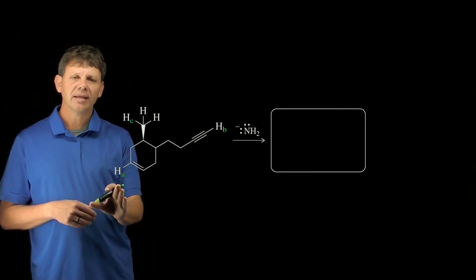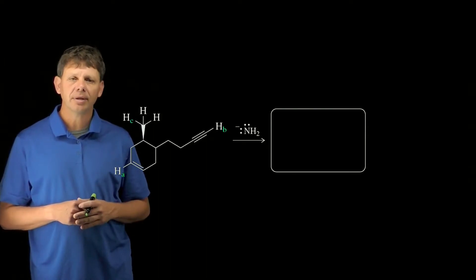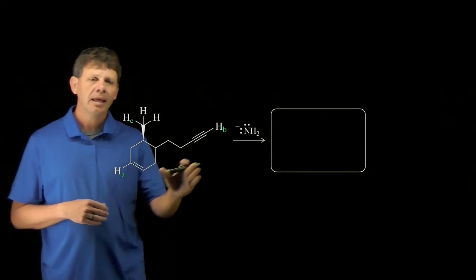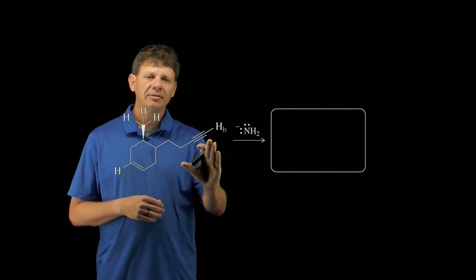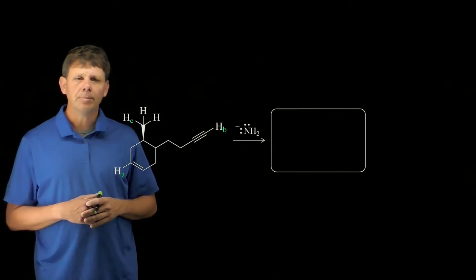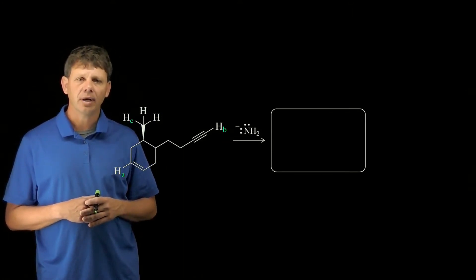This hydrogen here is connected to an sp2 hybridized carbon, and so its conjugate base would be sp2 hybridized. And this one over here is on an sp hybridized carbon, its conjugate base would be sp hybridized as well.